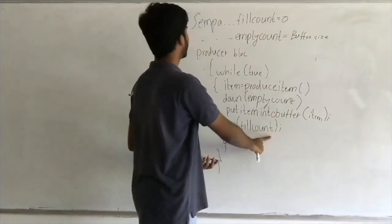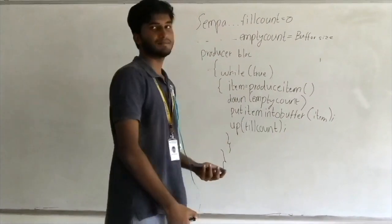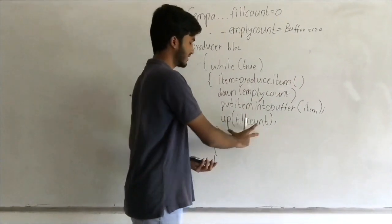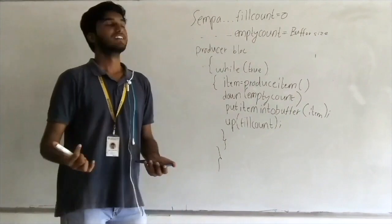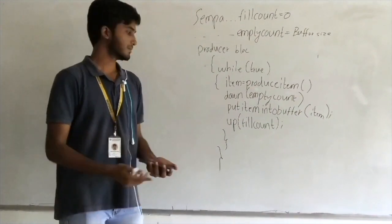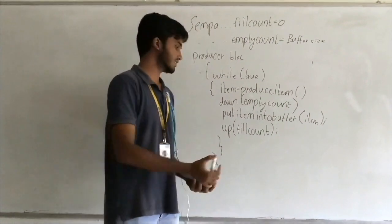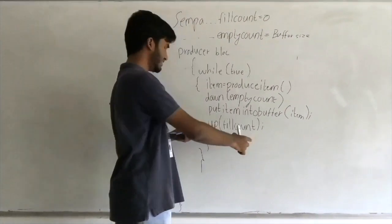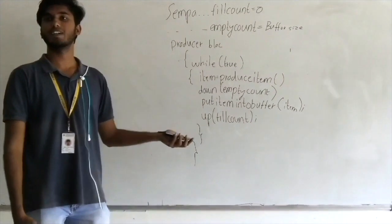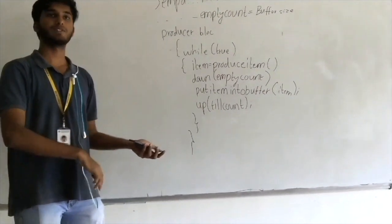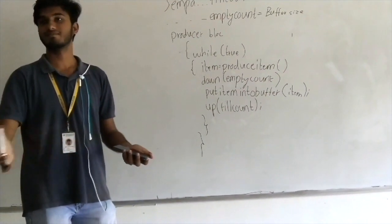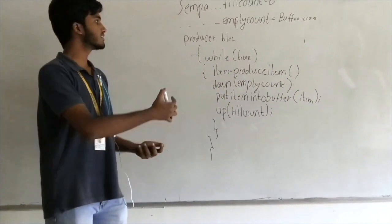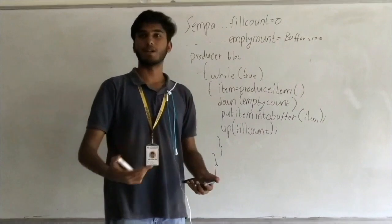Up the fill count — the fill count is the number of readable items in the buffer. When the producer produces an item, that increments the fill count by one, meaning we now have a readable item in the buffer. In this code we don't have the wake-up-producer and sleep-consumer lines from the previous code, because that problem has been rectified using this semaphore-based solution.